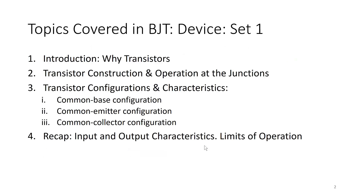The topics covered in BJT Device Set 1 are: first, an introduction to why transistors are needed; then construction and operation at the junctions; transistor configurations and characteristics including common base, common emitter and common collector; and finally a recap on the input and output characteristics and limits of operation.